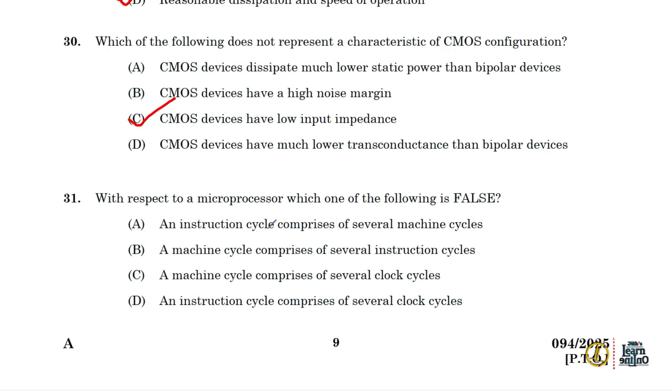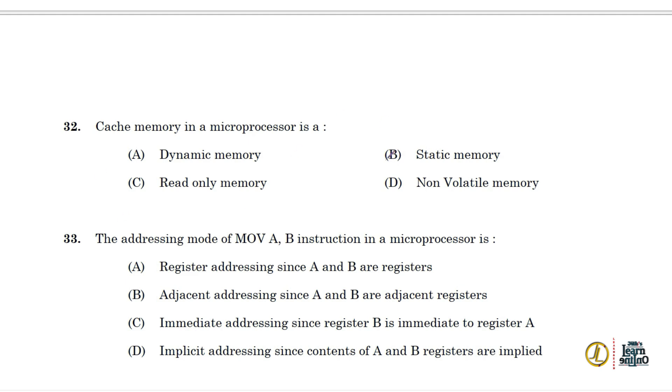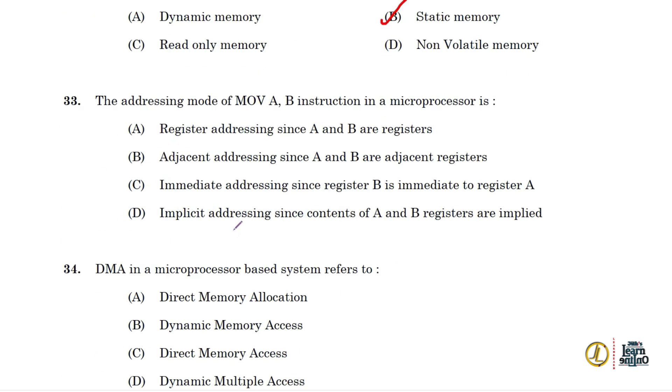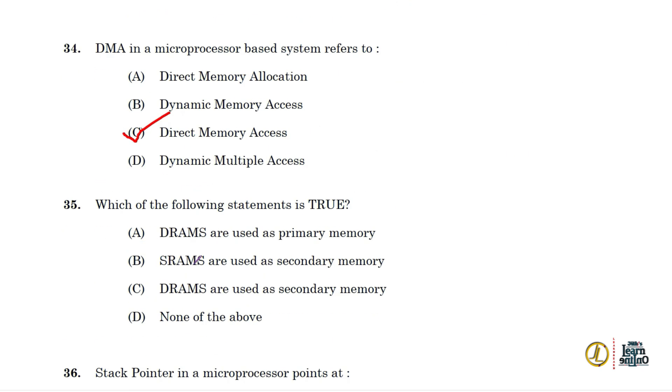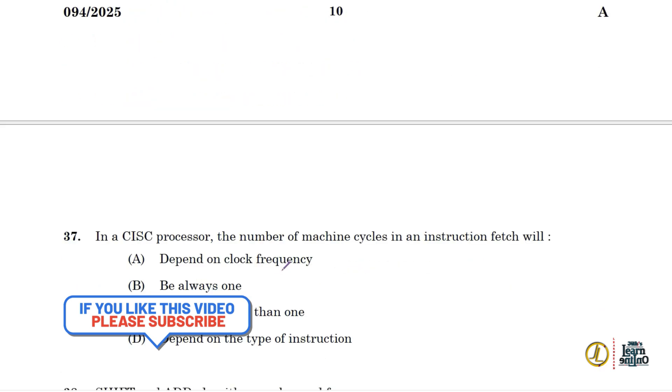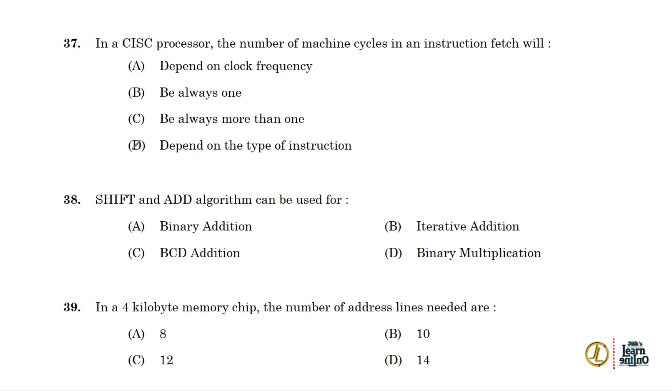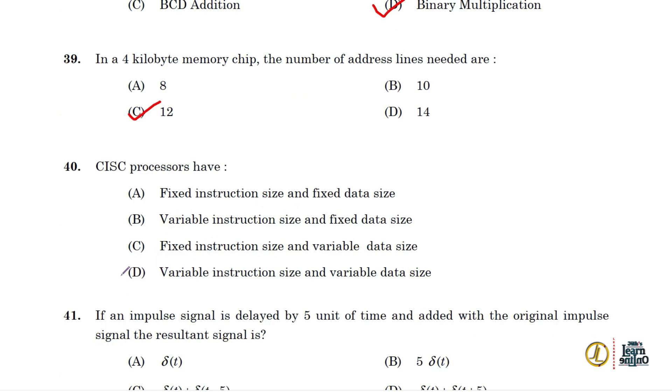Thirty One B. Thirty Two B. Thirty Three A. Thirty Four C. Thirty Five A. Thirty Six C. Thirty Seven D. Thirty Eight D. Thirty Nine C. Forty D.